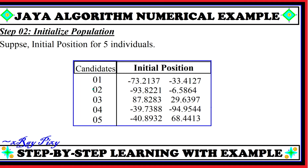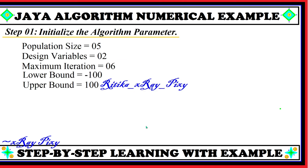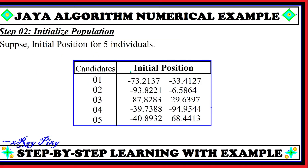In step 2, we will initialize the population for the 5 candidates. You can see the position for each candidate in the search space, and all these values are within the bounds — that is, within the lower bound and upper bound.